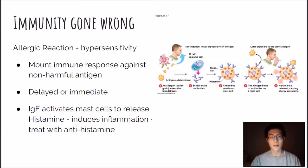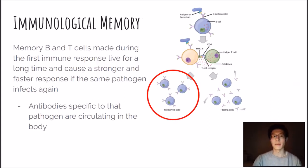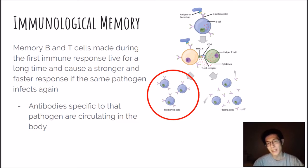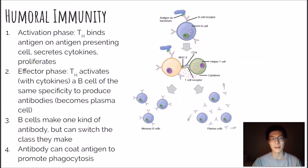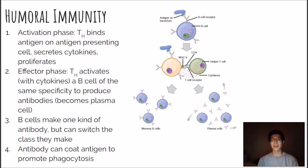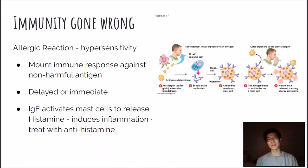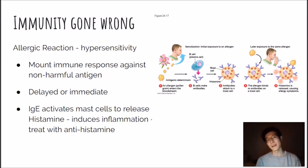A key concept about immunity is that it takes time — especially the adaptive immune system. The innate immune system reacts relatively quickly, but the adaptive immune system must go through activation and an effector phase. This is why it takes about a week or more to feel better from a cold or flu: humoral or cell-mediated immunity can take about a week to go into full swing. The adaptive system is more specific than the innate system, but it sacrifices speed for that specificity.